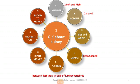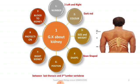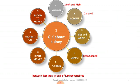Regarding position, kidneys are located between the last thoracic and the third lumbar vertebrae, as shown in the diagram. The right kidney is slightly lower due to the liver, because our liver is on the right side of our body, which pushes the right kidney lower as compared to the left one.